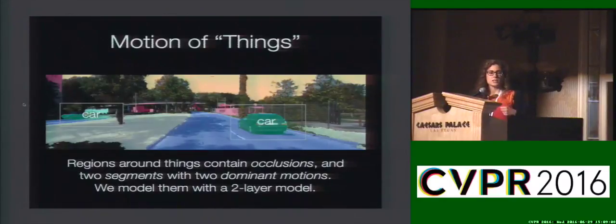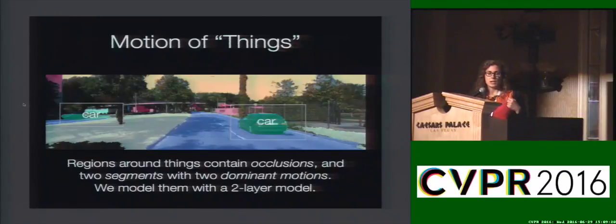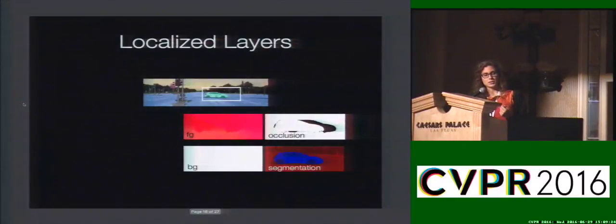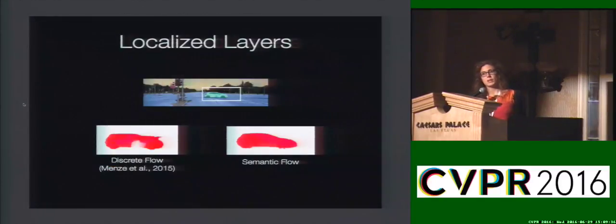Things are objects that move independently, like cars or people. Around these regions, we expect occlusions, and we expect two segments with two dominant motions. We model this with a two-layer model, and we call them localized layers. In particular, we jointly estimate the motion of the foreground, the background, and the segmentation, as well as an occlusion map. And we combine these to obtain much better results.